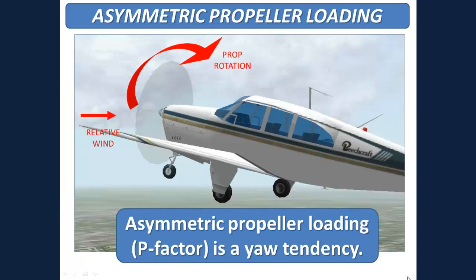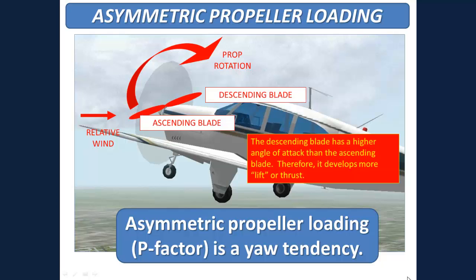Asymmetric propeller loading, or P-factor, is a yaw tendency. P-factor only operates when the airplane is at a high angle of attack. The higher the angle of attack, the more pronounced it becomes. At a high pitch attitude, the descending blade is advancing into the relative wind and has a higher angle of attack than the ascending blade. Therefore it develops more lift, or actually thrust. As viewed from the pilot seat, the descending blade is on the right side of the longitudinal axis, so the turning tendency is to the left. Obviously, the higher the power setting, the greater the P-factor.